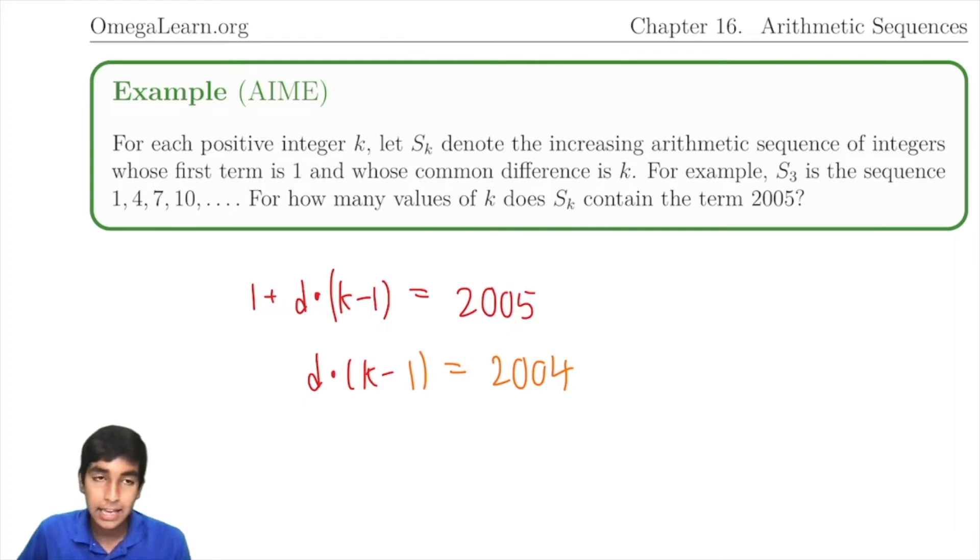Obviously, k cannot be equal to 1, because that would mean it's 0. So, k minus 1 must be a factor of 2004. What is the prime factorization of 2004?